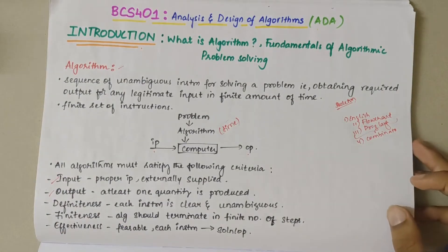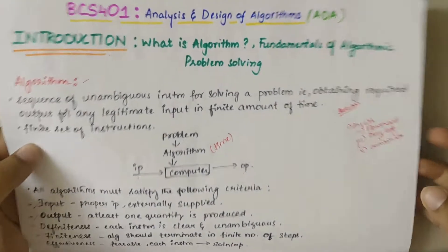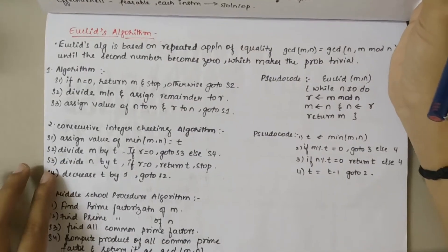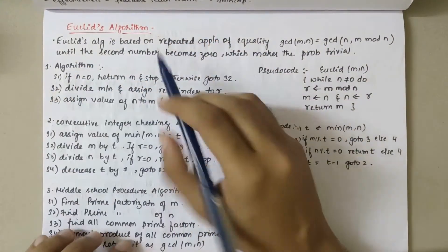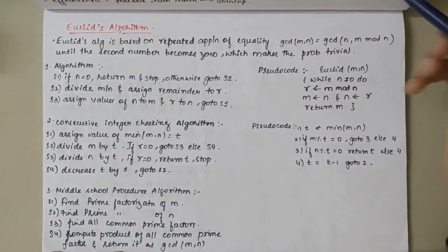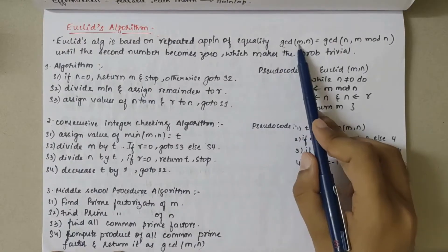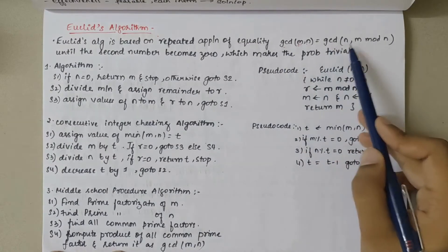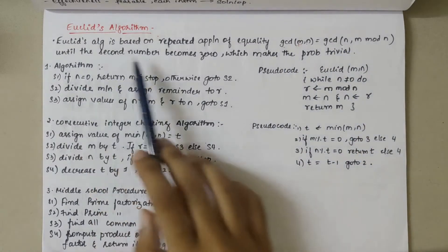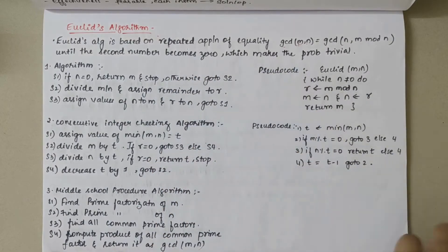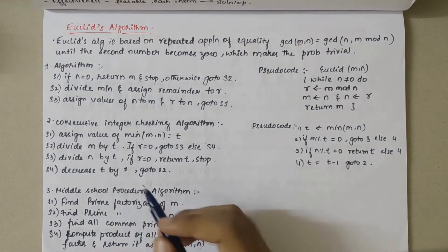Now I will discuss a basic algorithm - Euclid's algorithm. Euclid's algorithm is based on repeated application of equality, that is GCD of m comma n is equal to GCD of n comma m mod n, until the second number becomes zero which makes the problem trivial.